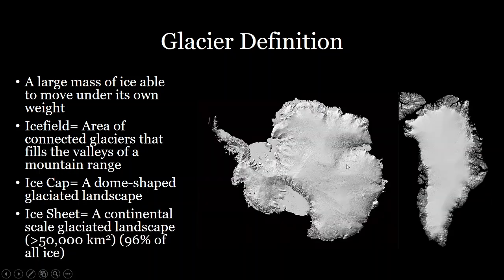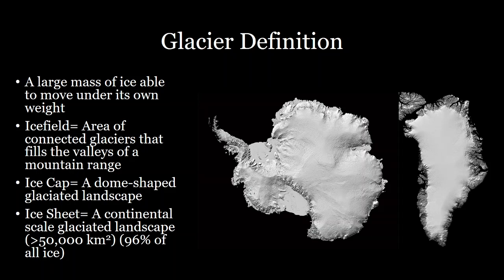And then the largest of them all are ice sheets. Ice sheets are continental scale glaciated landscapes — over 50,000 square kilometers. We only have two of these: the Antarctic ice sheet and the Greenland ice sheet. Together these two ice sheets make up 96% of all ice on Earth, so they're very expansive.